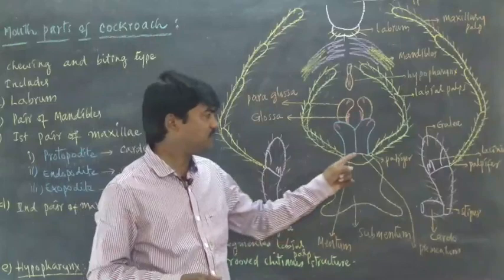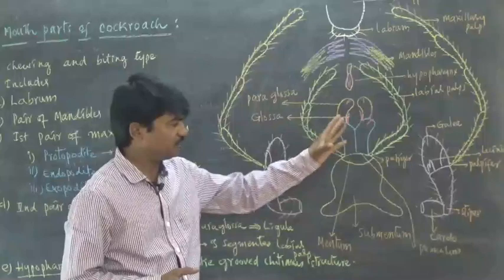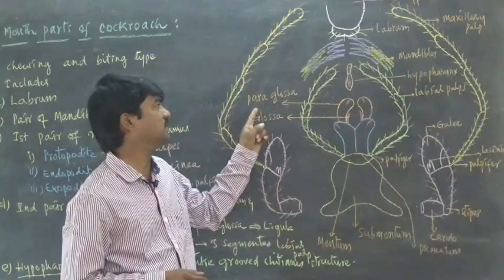Just on either side of the prementum, a small segment is present called palpiger. Palpiger arises into a three-segmented part called labial palps. Inside of that, a two-segmented part is present called glossa and paraglossa.